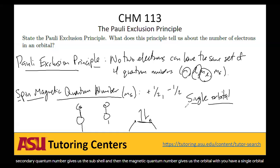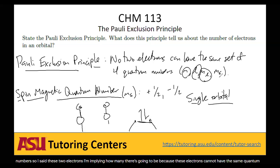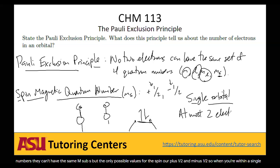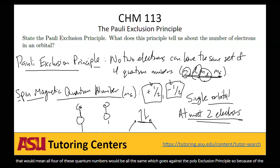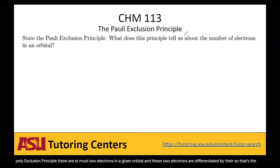Because electrons within the same orbital share the same n, l, and M sub L, they cannot have the same M sub S. But the only possible values for spin are plus one-half and minus one-half, so within a single orbital you can have at most two electrons. You can't have three, because a third electron would repeat a spin value — giving two electrons all four identical quantum numbers — which violates the Pauli Exclusion Principle. So the principle tells us there are at most two electrons per orbital, differentiated by their spin.